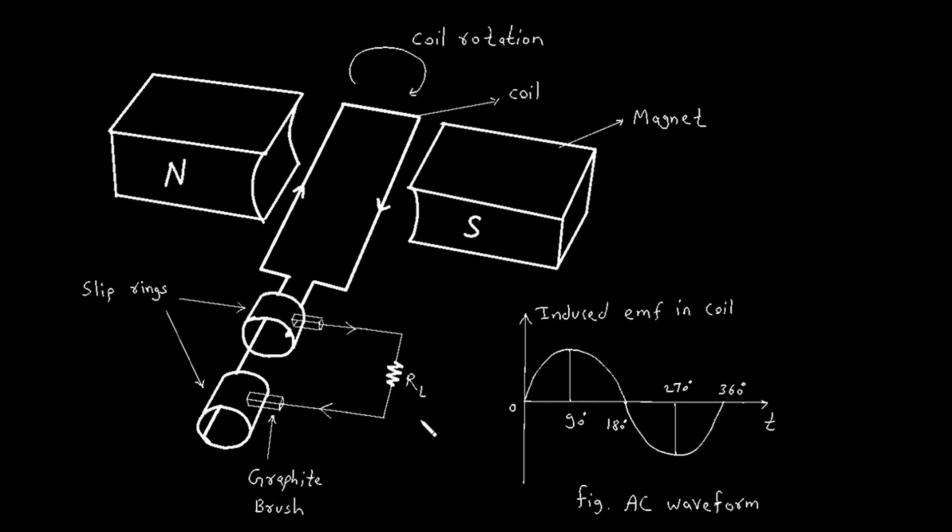When the alternating EMF is applied to the load, it drives an alternating current, or AC, through the circuit. This current also varies sinusoidally, following the same waveform pattern as the induced EMF. The alternating current delivers power to the load, enabling it to function.